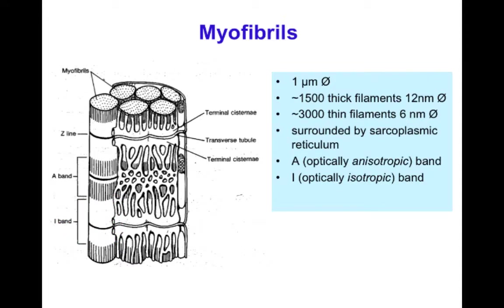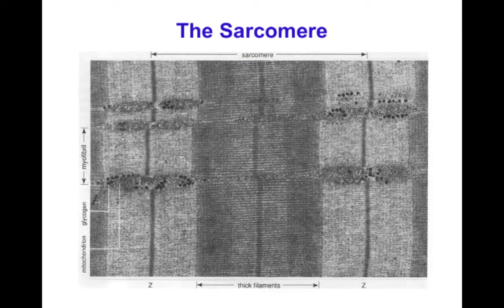When a muscle changes length, the question is which band changes length. Because what changes is not the length of the filaments but the amount of overlap, the I band — the non-overlapping part of the actin on either side of the Z disc — is what changes. In a transmission electron micrograph of the real structure, you can see different myofibrils with Z lines in close register, mitochondria between myofibrils, thick filaments, the M line, the I band, and the Z disc.